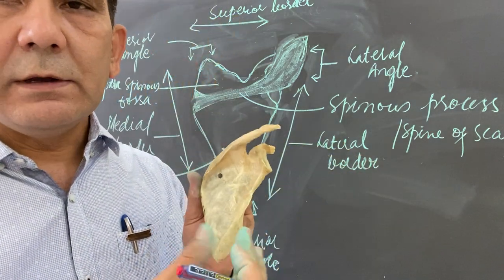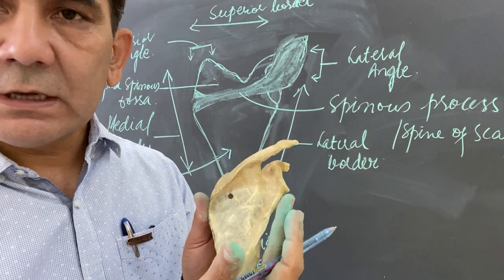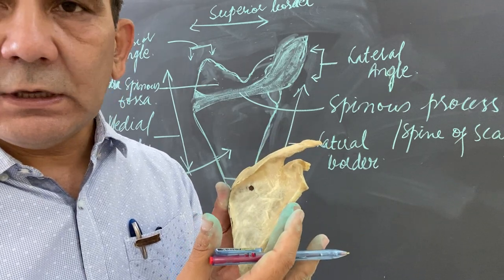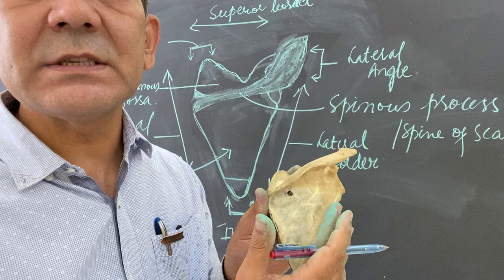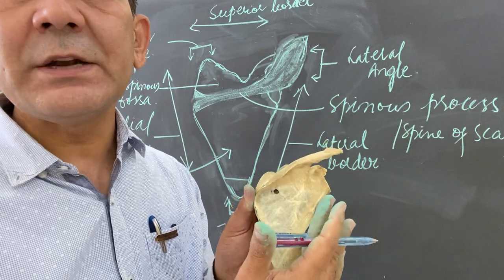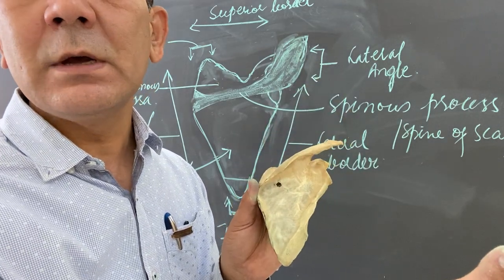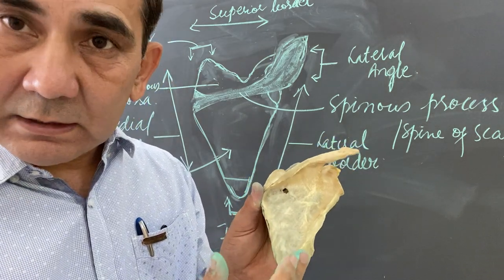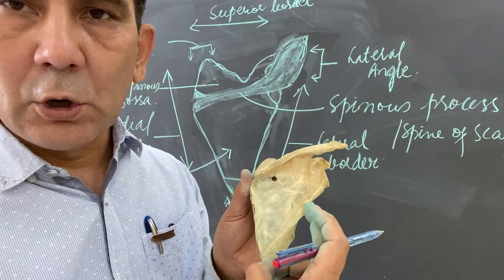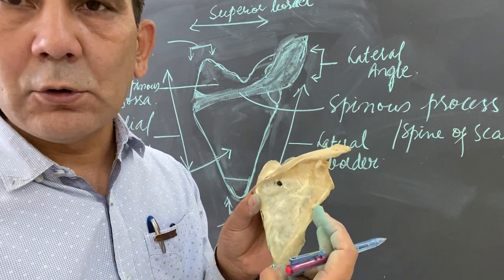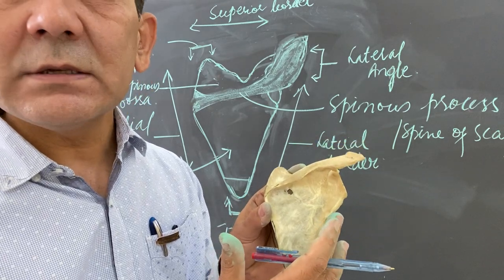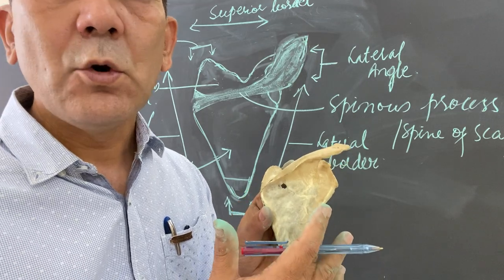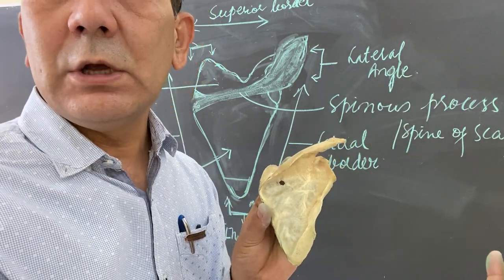On the lateral border, there is a superior portion and an inferior portion. In the superior portion of the lateral border, the teres minor muscle attaches and originates from here, going to attach with the tuberosity of the humerus bone. The lower portion of the lateral border is where the teres major muscle attaches, originating from here and going to attach with the humerus bone.